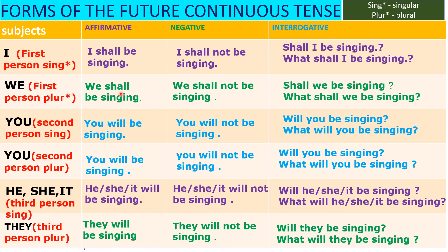First person uses 'shall be,' second and third person use 'will be.' The structure is the same as simple future but with 'be + V-ing.' This is the future continuous tense form and structure. Make sure you know this for the exam — this is the minimum you need to know.